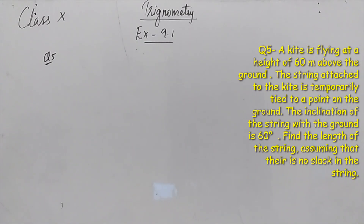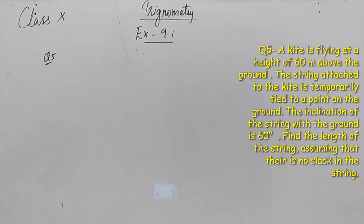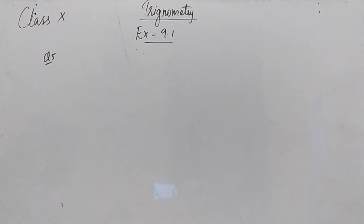Question No. 5. A kite is flying at a height of 60 meters above the ground. The string attached to the kite is temporarily tied tight to a point on the ground. The inclination of the string with the ground is 60 degrees. Find the length of the string, assuming that there is no slack in the string.